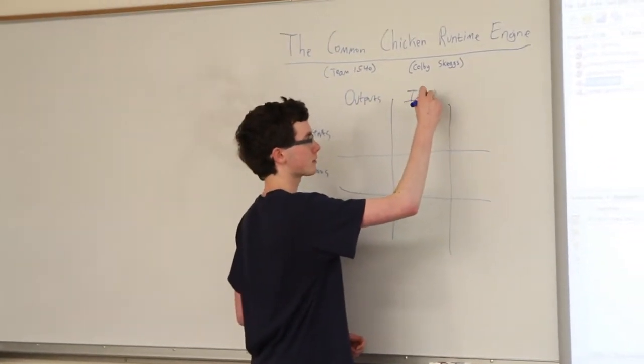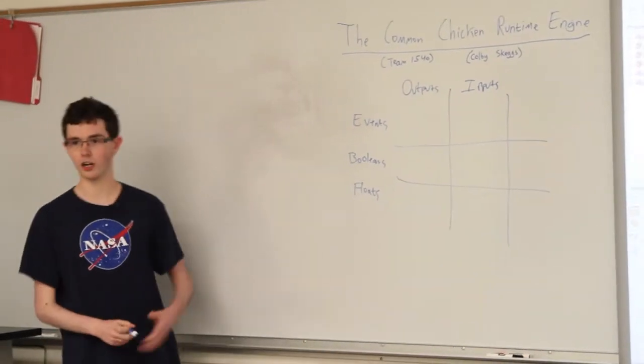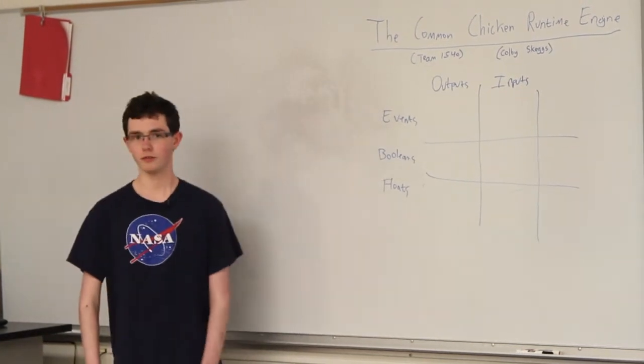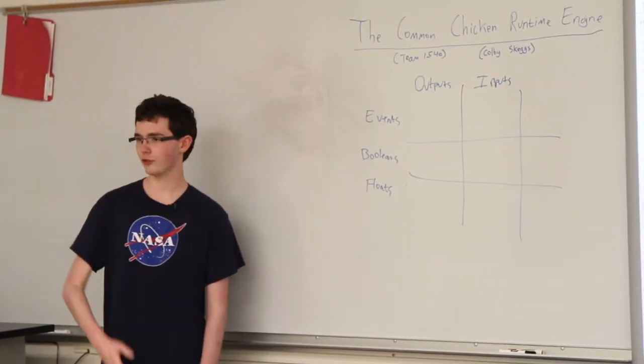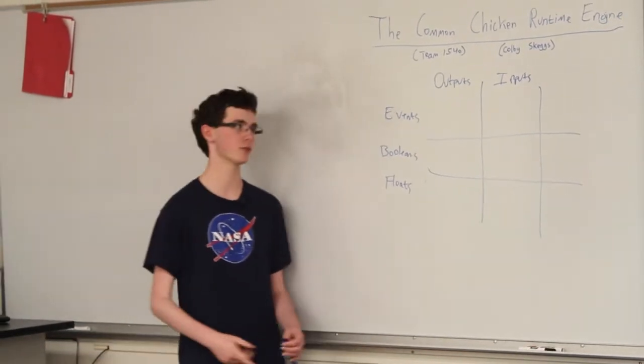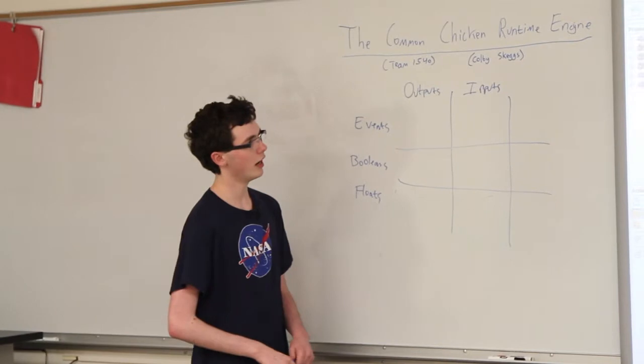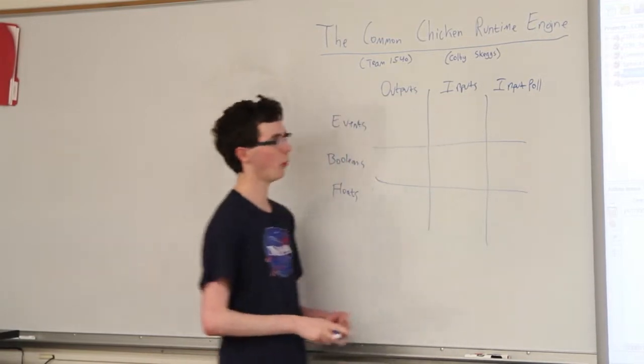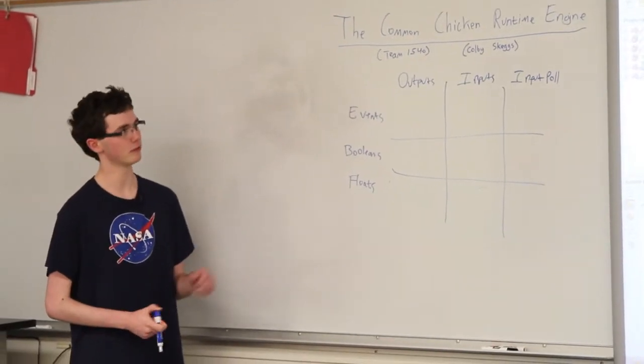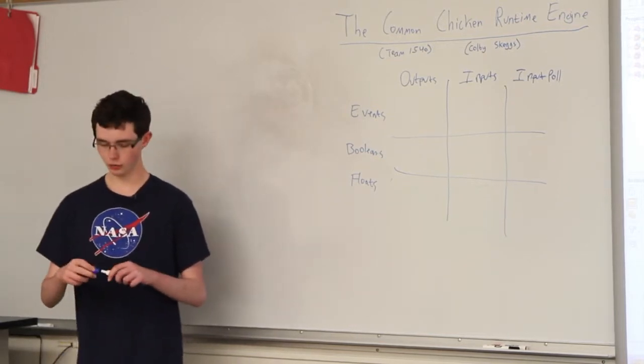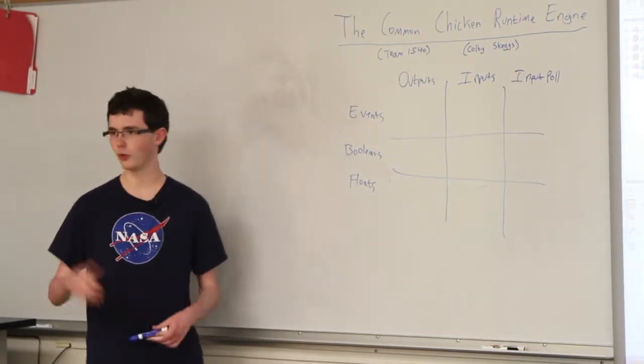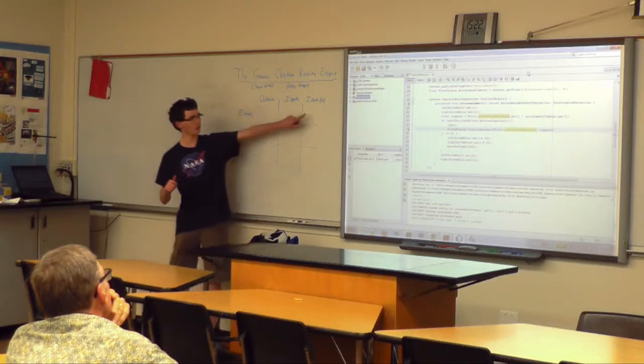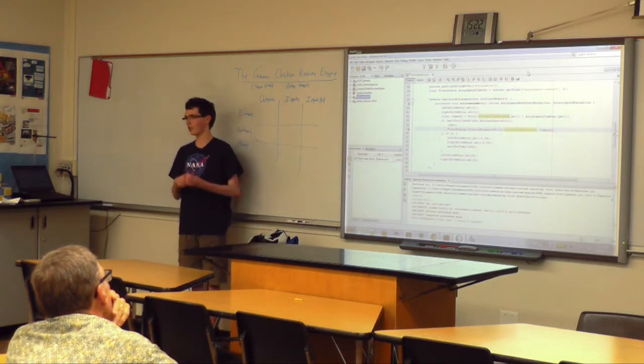We have outputs, so a Boolean output could be a solenoid, a relay, or half a relay. A motor would be a float output. We also have inputs. An input pole means I don't know when it changes, but when I want to know it, I can know it.